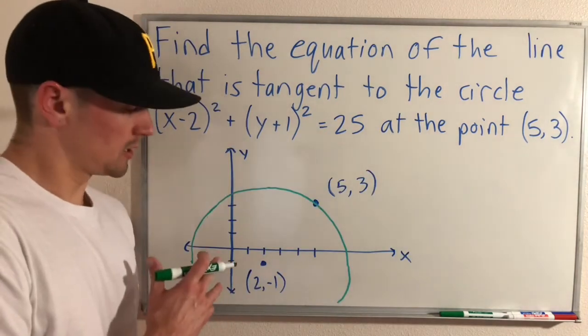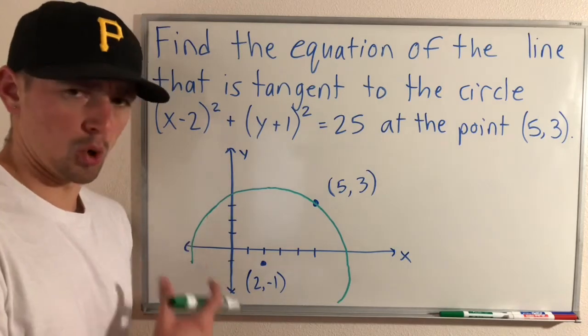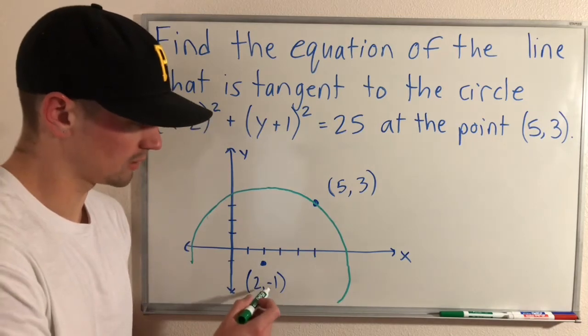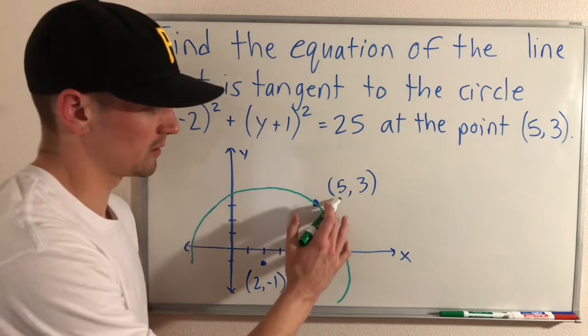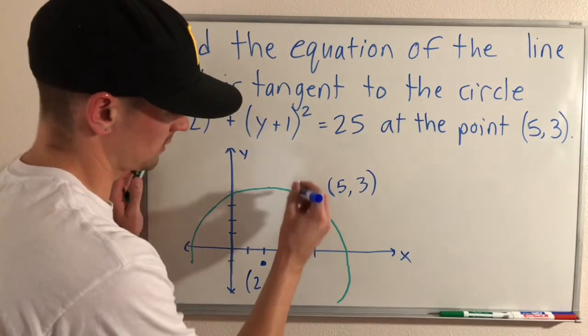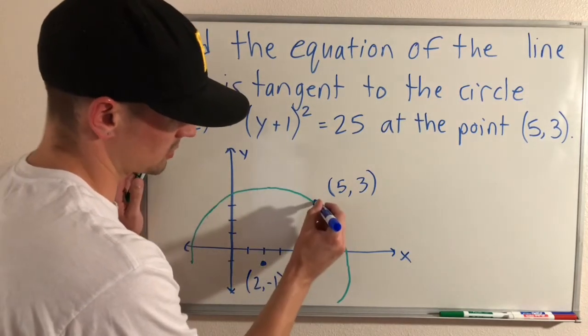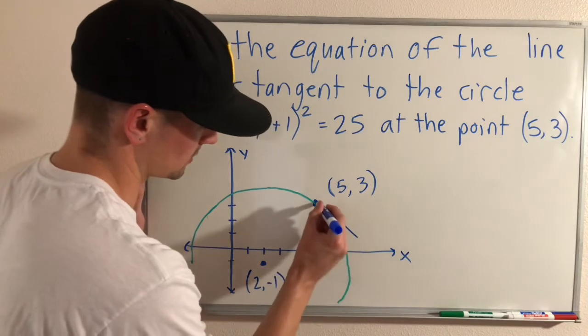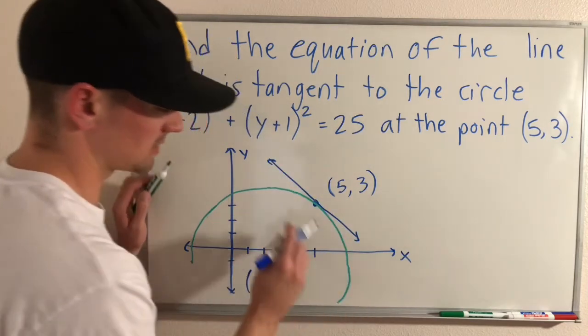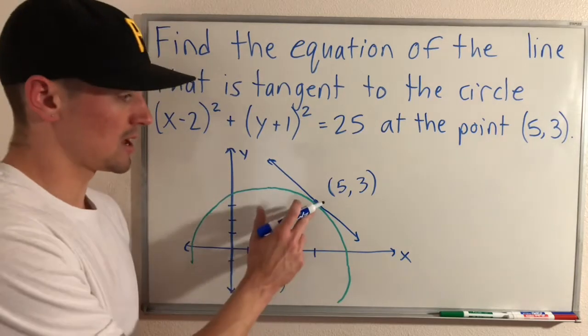So first let's start by sketching out this circle and putting that point on our graph. So here is what our circle, at least a portion of our circle would look like if we graphed it. We have the center of our circle here at (2, -1), and then we have this point that we're trying to find a tangent line to the circle that goes through this point. So we need to find the equation of a line that would go something like this. Right, this line is tangent to this circle at that point.